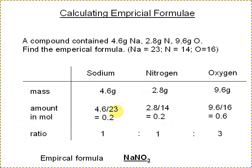And that comes out as 0.2 for sodium, 0.2 for nitrogen, and 0.6 for oxygen. So we would say this is in a ratio of 1 to 1 to 3. Give the empirical formula of NaNO3.